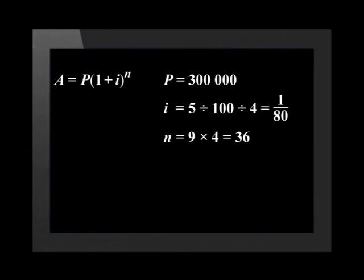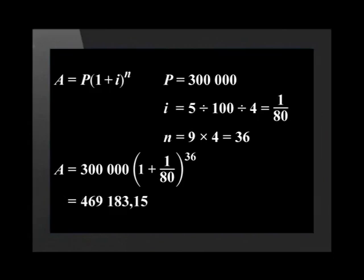Substituting these values into the equation gives us A equals 300,000 bracket 1 plus 1 divided by 80 bracket to the power of 36. This gives us an answer of R469,183.15.